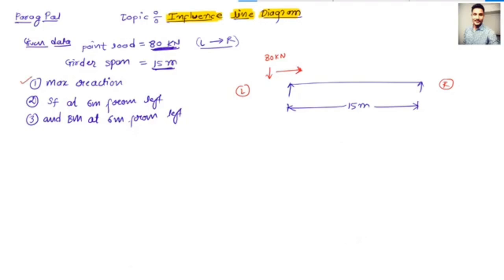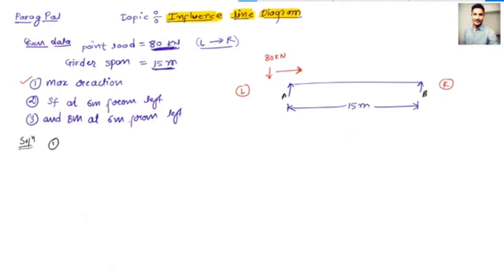Always remember, this is my A point and this is my B point. Reaction is always calculated at the support. So the first solution I am going to write here is: first, maximum reaction.